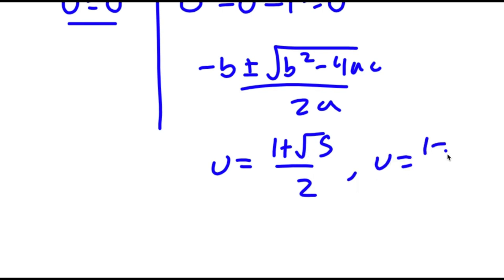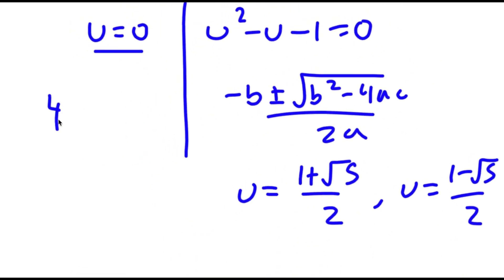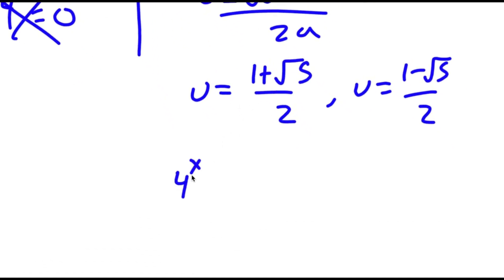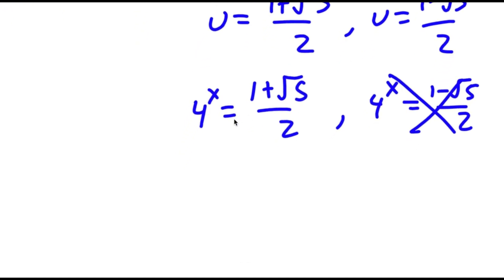And u is equal to 1 minus the square root of 5 over 2. Remember how we set 4 to the power of x equal to u. So first, 4 to the power of x equals 0 — there's no solution to this because you can't take the power of a number and make it equal to 0. And 1 minus the square root of 5 is going to be a negative number, and you can't take the power of a positive number and make it negative, so that's no solution as well. So I have 4 to the power of x is equal to 1 plus the square root of 5 over 2.